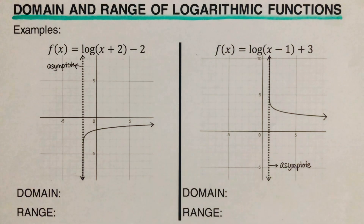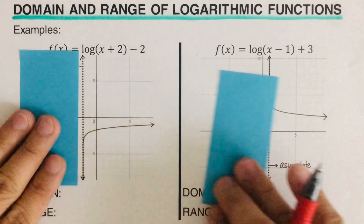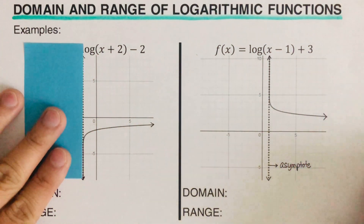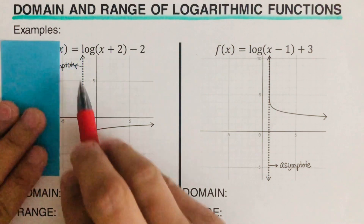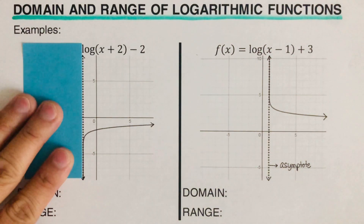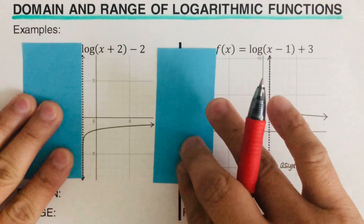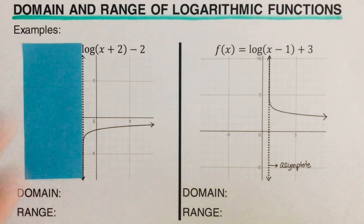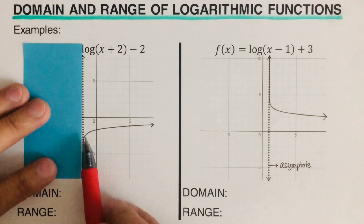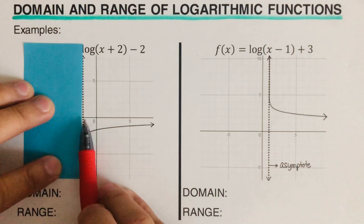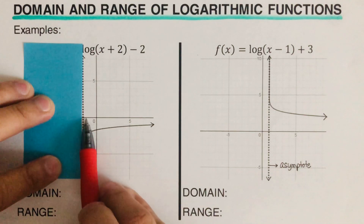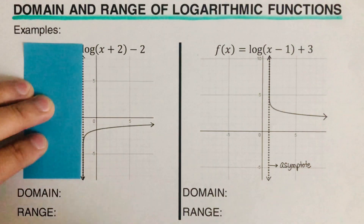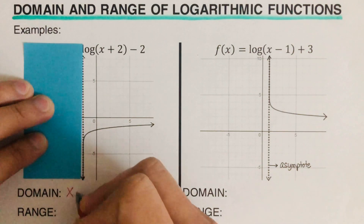Let's take this first example. For the domain of this graph, we remember that domain refers to the leftmost boundary and the rightmost boundary. Looking at this graph, this is our leftmost boundary — it stops here and doesn't go beyond this line. The rightmost boundary, if we trace it, doesn't end, so we can't put a boundary there. We can say that our domain would be anything greater than negative 2, since we're looking at x values to the right of negative 2. So we write the domain as x is greater than negative 2.